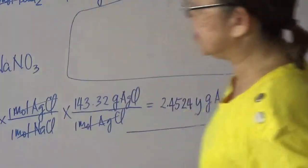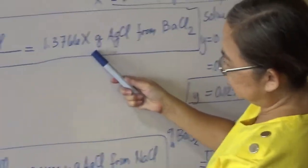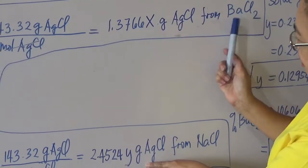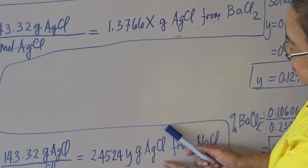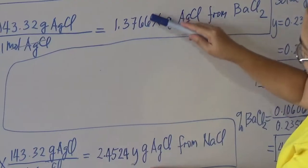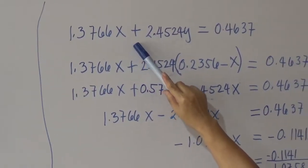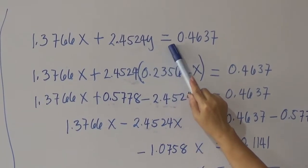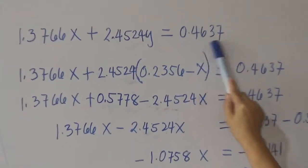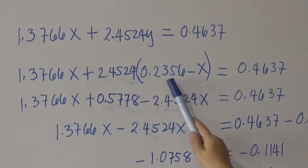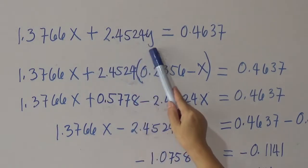Adding the two contributions — the precipitate from barium chloride and the precipitate from sodium chloride — we form the equation: 1.3766x + 2.4524y = 0.4637, where 0.4637 is the total mass of the precipitate. We now have two unknowns, x and y, so we substitute the expression for y in terms of x derived from our first equation: y = 0.2356 − x.